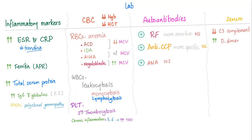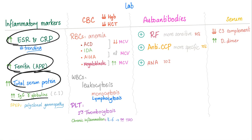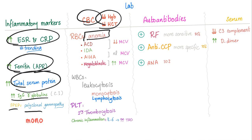Lab results in rheumatoid arthritis: ESR and CRP are usually high. Ferritin is high as an acute-phase reactant. There is increased total serum protein and increased IgG gamma globulin. Serum protein electrophoresis shows polyclonal gammopathy — not to be confused with multiple myeloma, which shows monoclonal gammopathy. CBC shows low hemoglobin and hematocrit with normocytic normochromic anemia, leukocytosis, and secondary thrombocytosis due to interleukin-6.